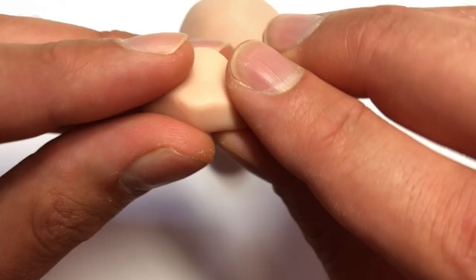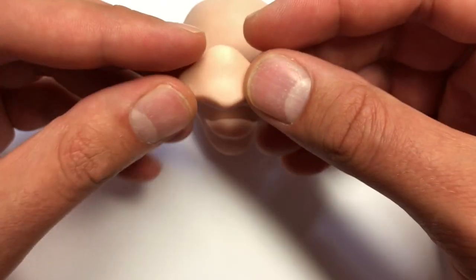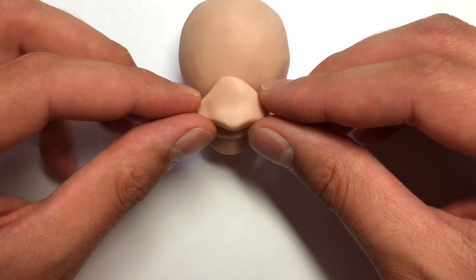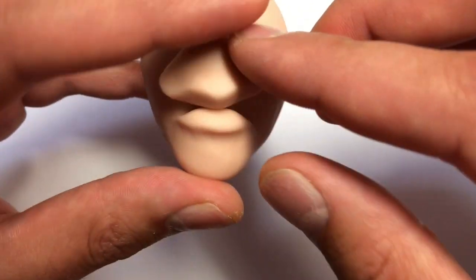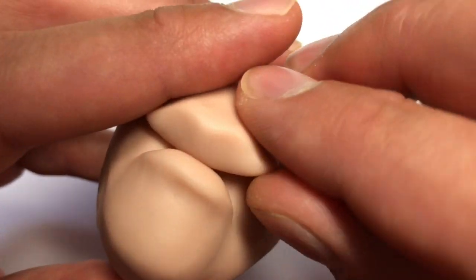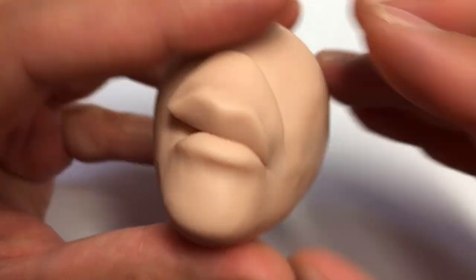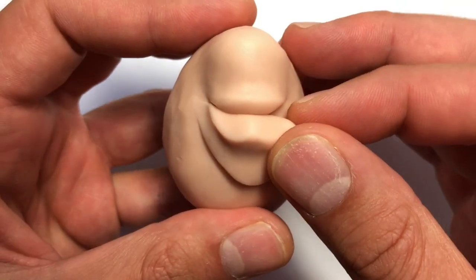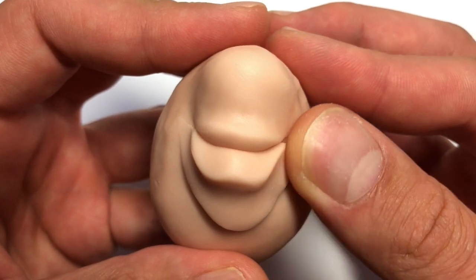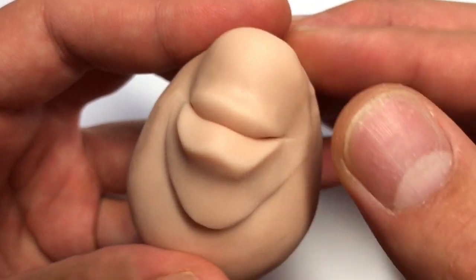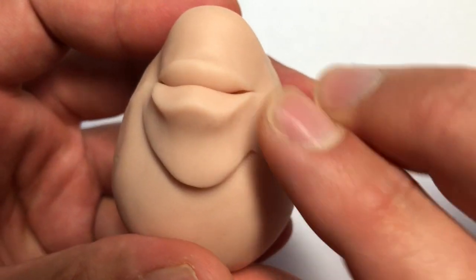We're just going to take this and add it above the bottom lip, curving the bottom edges of it to line up correctly with the bottom lip. Then just go in here and further shape everything so that it looks exactly how we want it to.